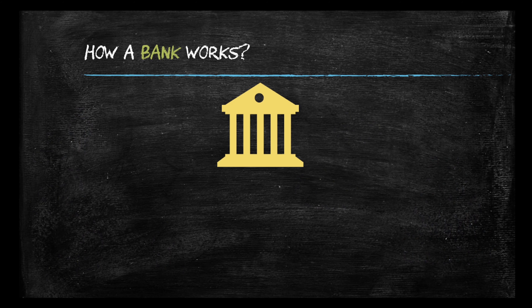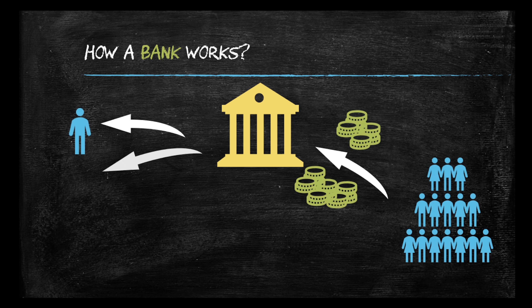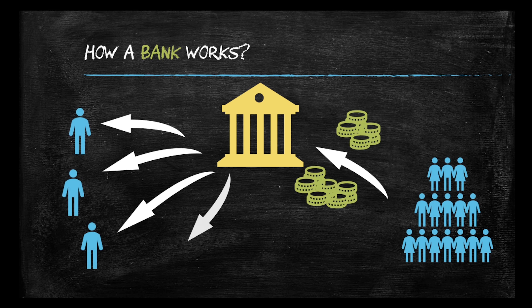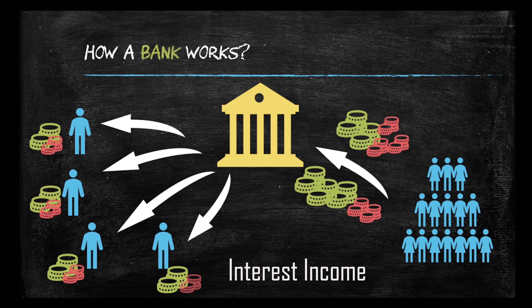When these people return the money to the bank, the bank distributes it back to the individuals, including you. While doing so, the bank also earns interest from these individuals and distributes this interest to each one of you. In the process, the bank earns a little profit for itself — which can be called a fee or an earning — but the bank needs it to function properly.